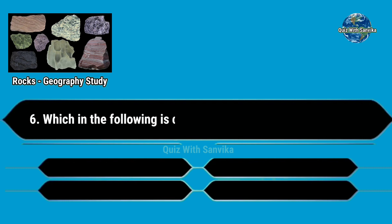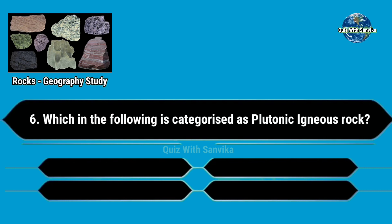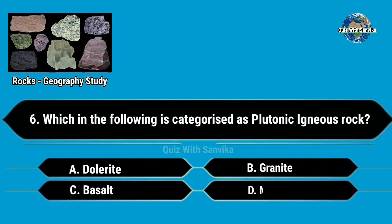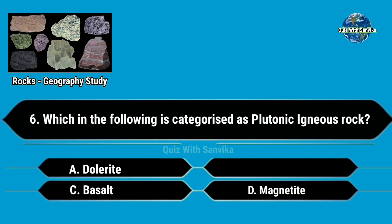Which of the following is categorized as plutonic igneous rock? Options are A. Dolorite, B. Granite, C. Basalt, and D. Magnetite. Answer is B. Granite.